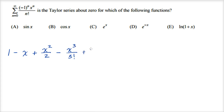Then it's going to be minus x to the third over three factorial, plus x to the fourth over four factorial, and it keeps alternating on and on.